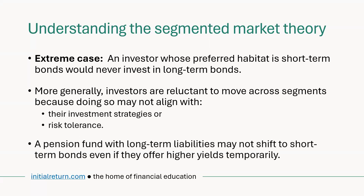To give a more practical example, pension funds generally face long-term liabilities because as people age they will have to pay them their pensions. So pension funds may have to invest in long-term bonds to match the maturities of those liabilities. For them, the key part of the yield curve is the long-term bond segment, and they would primarily trade there even if short-term bonds temporarily offer better yields. There might also be regulatory restrictions related to that, and all of these things foster market segmentation in general.